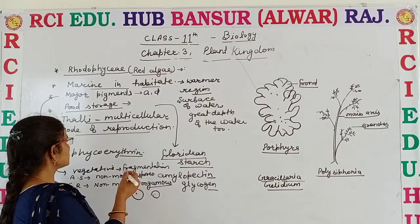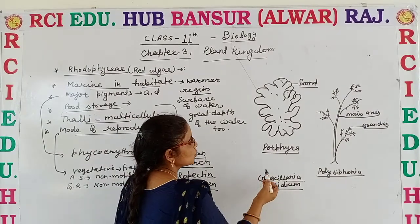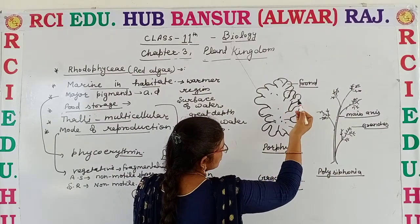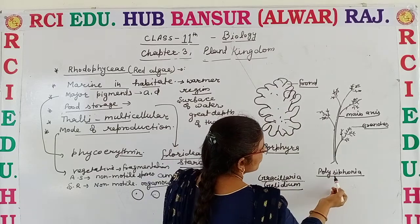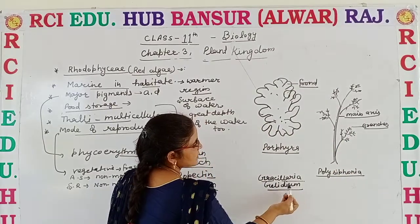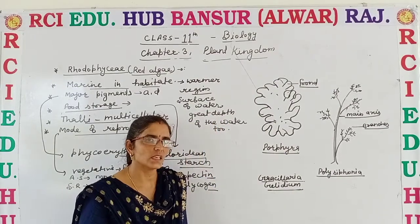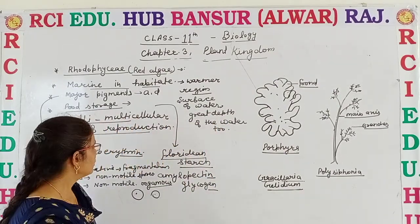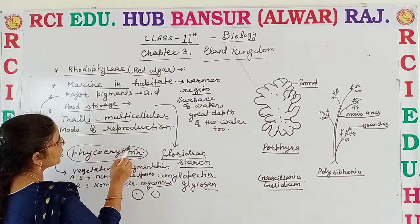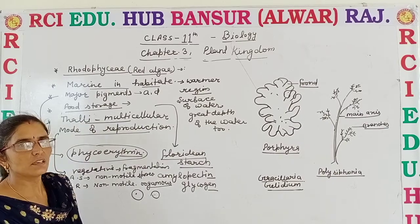Now we discuss about some common examples of red algae. Those are Porphyra, where the frond is visible; Polysiphonia, having branches and a main axis; Gracilaria and Gelidium. These are the common examples of red algae. The main thing is that they contain the pigment phycoerythrin, due to which these are red in color.